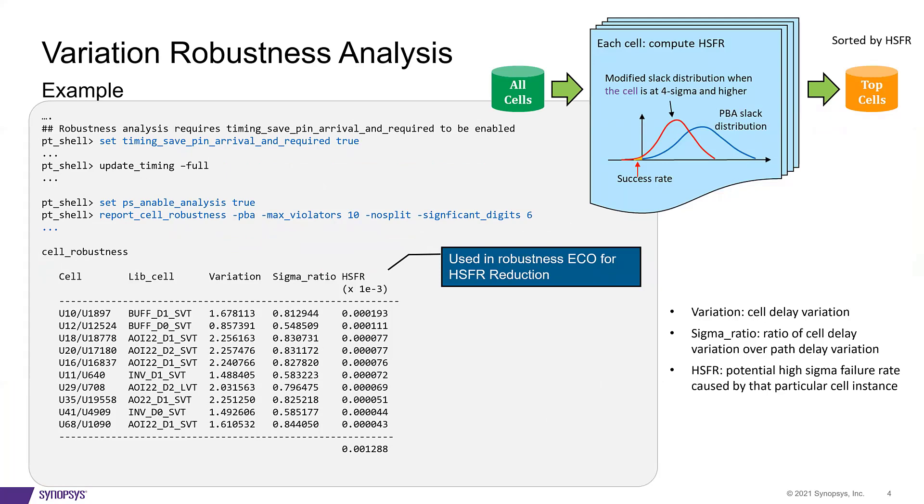In the variation robustness approach, we analyze the whole design, that is, the analysis considers all the cells in the design and checks how much variation each cell can have. As shown in the graph on the upper right, we determine all the paths going through a specific cell and calculate the worst slack distribution for that cell.